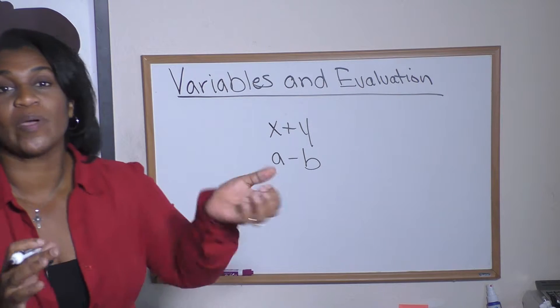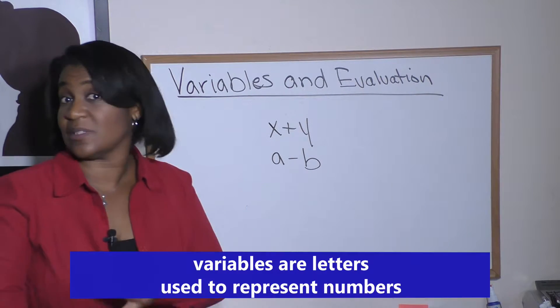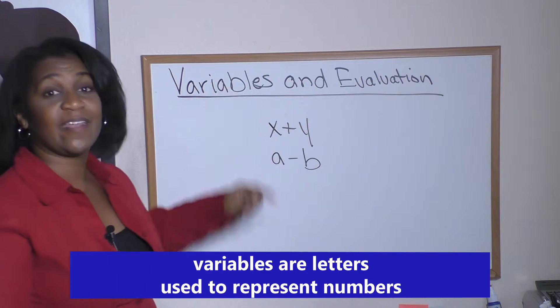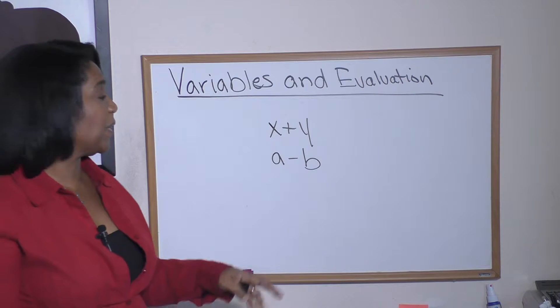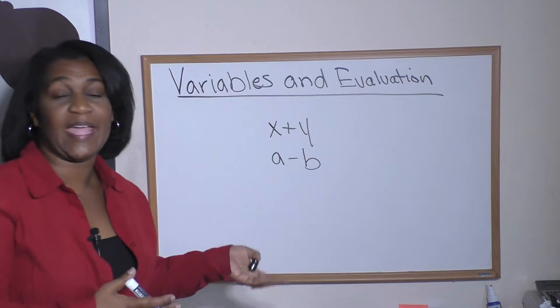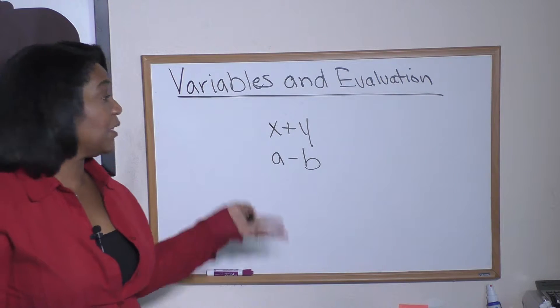Well, sometimes in math we don't always know a number, and to be able to express that, we use a letter instead. We call that a variable. You can see I have some variables up here: I have X, I have Y, I have A minus B. It really could be any letter of the alphabet can be your variable.